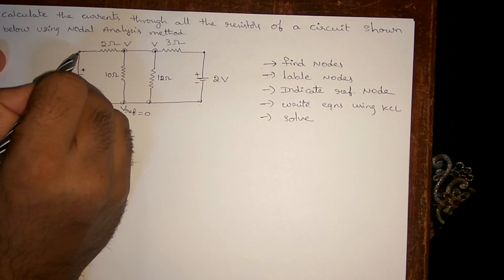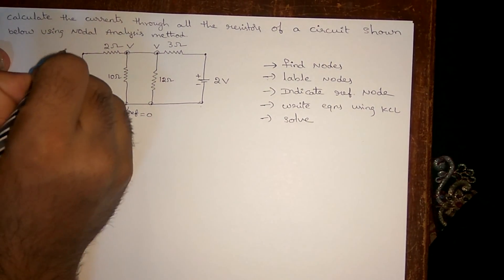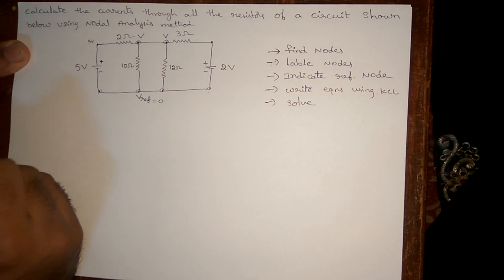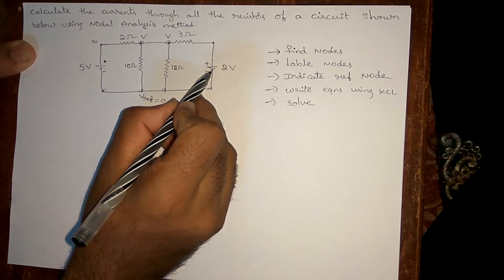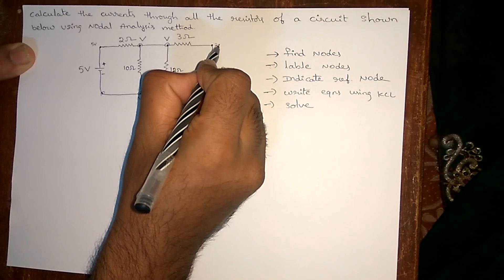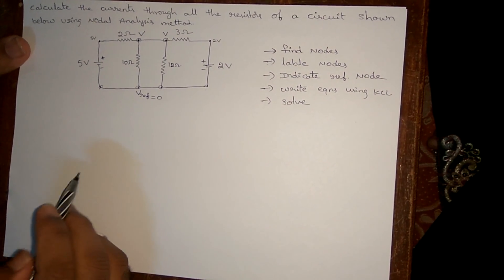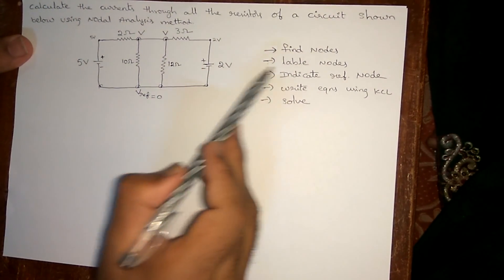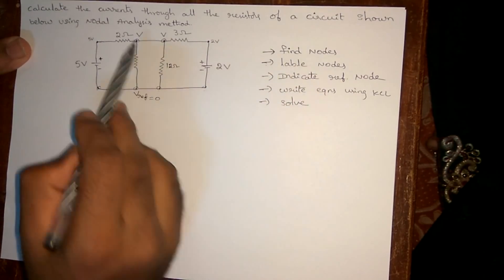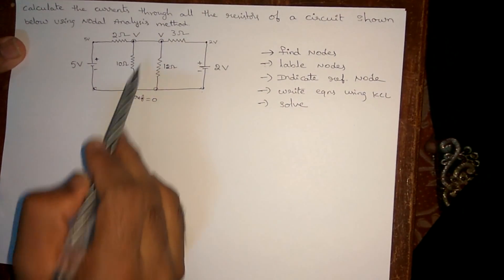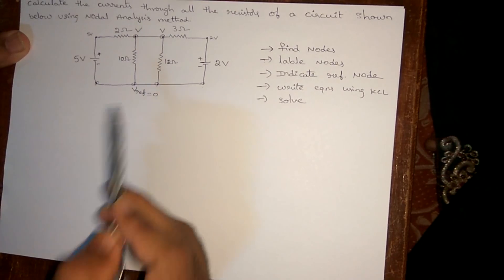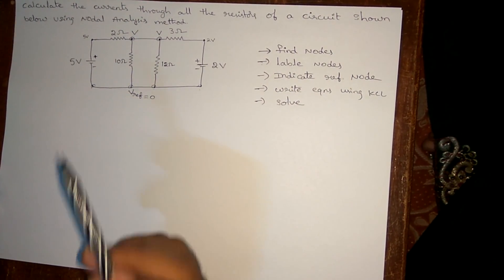Coming to this node — since it is connected to a 5-volt source, assume the voltage there is 5 volts. Here it is connected to a 2-volt source, so assume the voltage there is 2 volts. We have now finished finding the nodes, labeled them V, and indicated the reference node where V_reference equals zero.